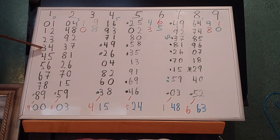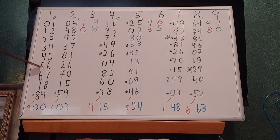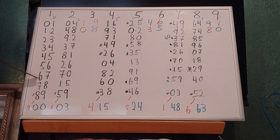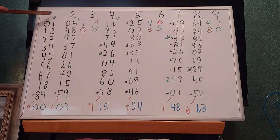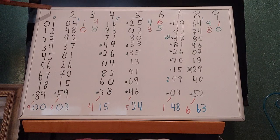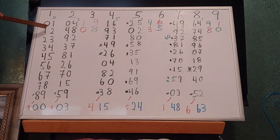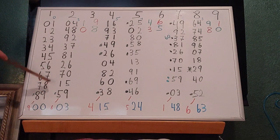Continuing the pattern: 1111 squared is 1234321, 11111 squared is 123454321, 111111 squared is 12345654321, 1111111 squared is 1234567654321, 11111111 squared is 123456787654321, and finally 111111111 squared is 12345678987654321.